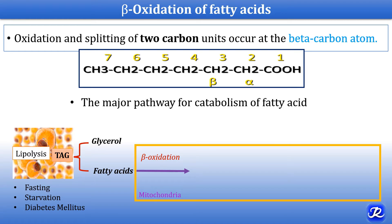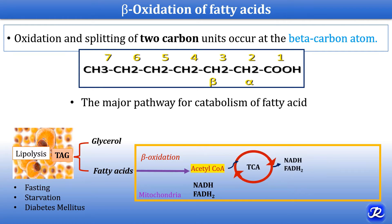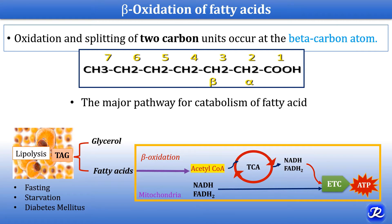What are the end products of beta oxidation? Acetyl-CoA and the reducing equivalents like NADH and FADH2. Acetyl-CoA undergoes the TCA cycle to form reducing equivalents, which later through the electron transport chain generate ATP.